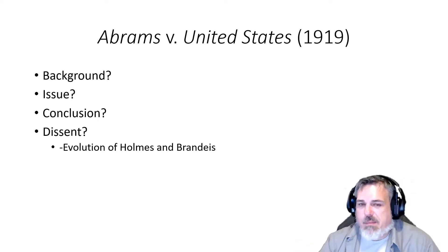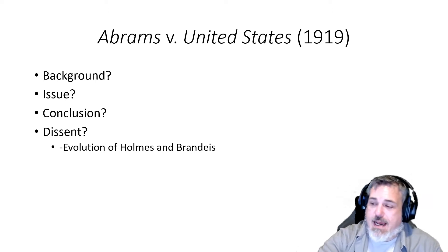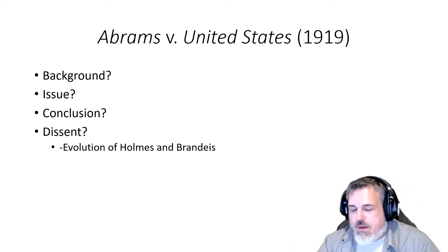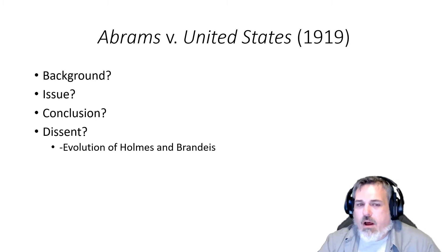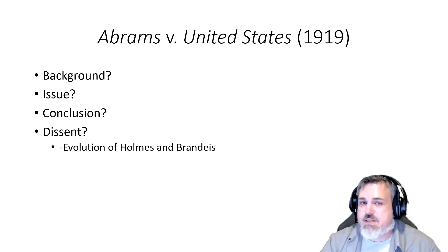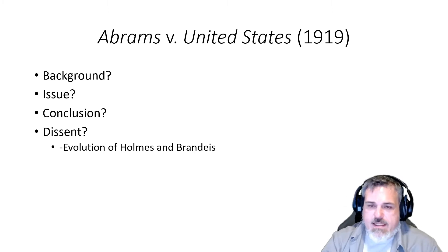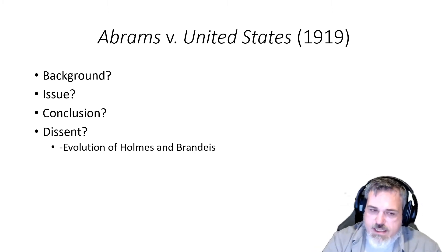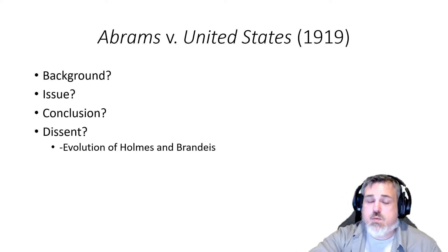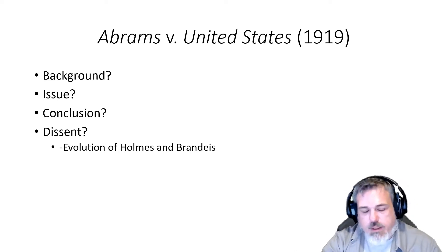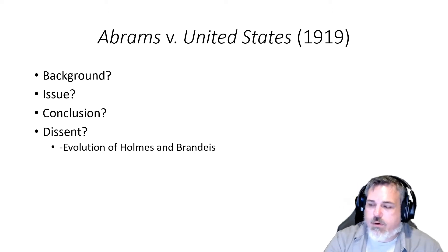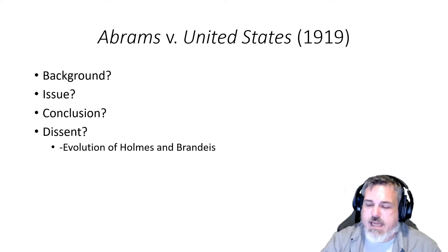But something monumentally different has happened. Whereas the previous case was 9-0, a unanimous opinion, this case is 7-2. Furthermore, the author of the Schenck opinion, Holmes, is one of the dissenters in this case. He dissents along with Brandeis, providing a very strong critique of the majority's opinion. And this is one of those times where I'm going to point you towards a dissent as being very important for the arc of these cases.